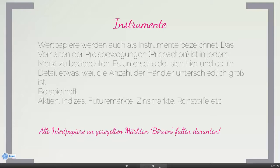Die Preis-Action unterscheidet sich ein bisschen zwischen Instrumenten, da unterschiedliche Teilnehmer mit unterschiedlichen Interessen unterwegs sind und auch Größe und Anzahl der Teilnehmer eine Rolle spielen. Sie kennen zum Beispiel den DAX 30 – dort sind die 30 größten deutschen Aktienunternehmen notiert. Der S&P 500 ist ein amerikanischer Index mit den 500 größten börsennotierten US-Aktiengesellschaften. Ob das 500 oder 30 Werte sind, spielt schon eine Rolle: Der DAX ist viel agiler und schneller als der S&P 500.